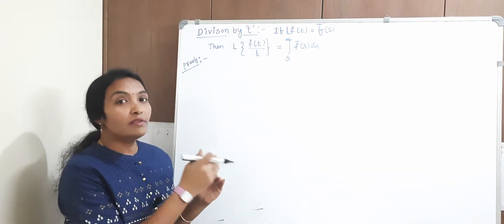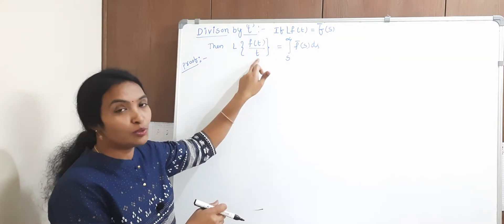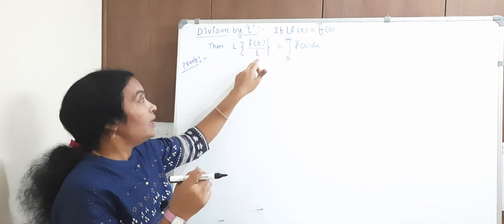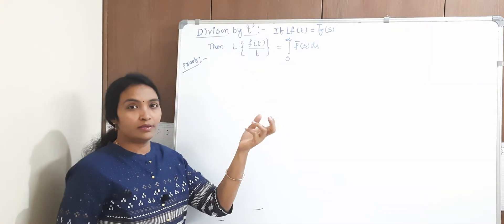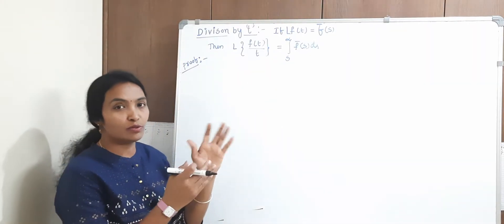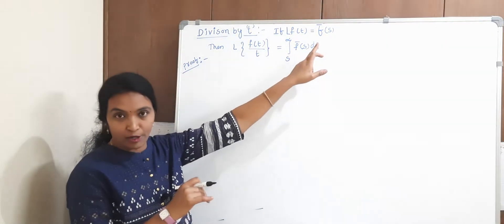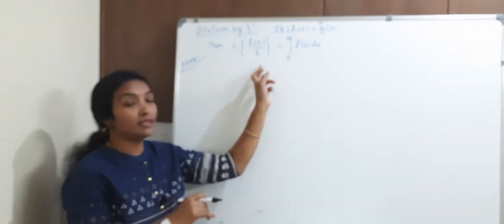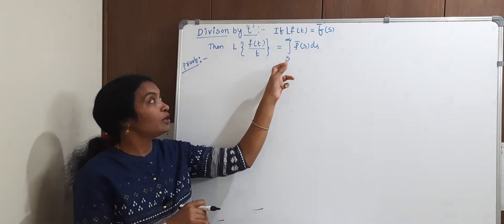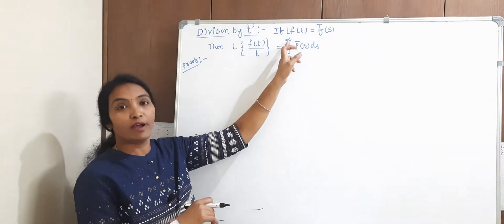And the next one is division. When a function has division by t, how to solve it — let us see a small proof. If L{f(t)} = F̄(s), then what we have to show is that L{f(t)/t} is equal to the integral from s to infinity of F̄(s) ds.